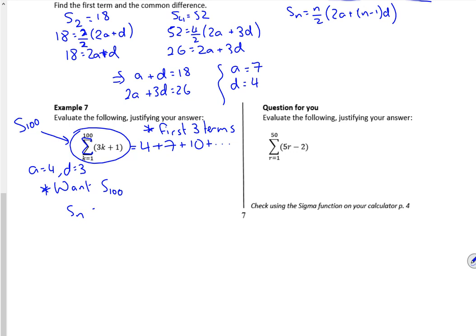So I know it's n over 2, 2a plus n minus 1d. So the sum of the first 100 terms is 100 over 2, 2 lots of 4, plus n minus 1 is 99 lots of 3. So the sum of the first 100 terms will be, checking the answers on a completed pack, 15,250. There you go.